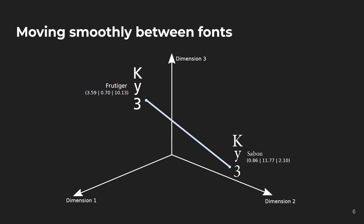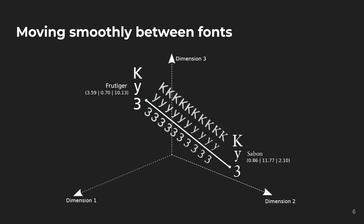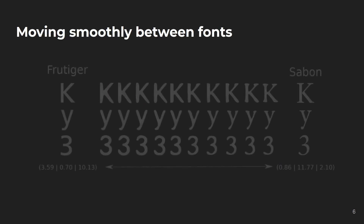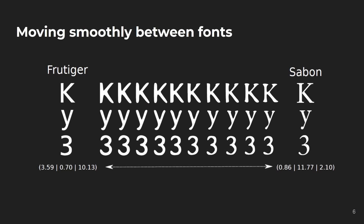This generative model allows not only creating new fonts, but also interpolating between actual fonts — for example between Frutiger and Sabon. Along this line in Euclidean font space, we can find an infinite number of unnamed fonts with gradual and smooth changes. Each of these unnamed fonts can be converted to a TrueType font file on the fly, so you can actually install and use them on every system.